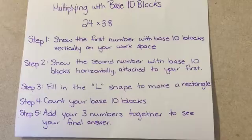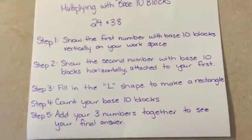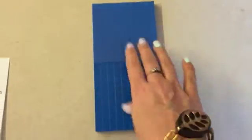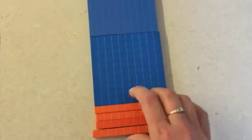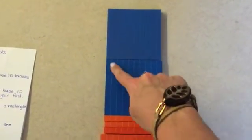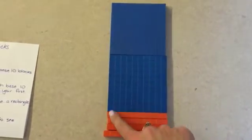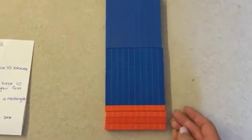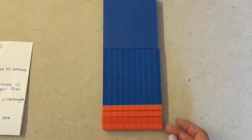Step 1 tells us to show the first number with base 10 blocks vertically on our workspace. So we have 2 flats and 4 rods to show that. To prove that I have 24, I know that I have 10 here and 10 is 20, then 1, 2, 3, 4. So that shows that I have 24.